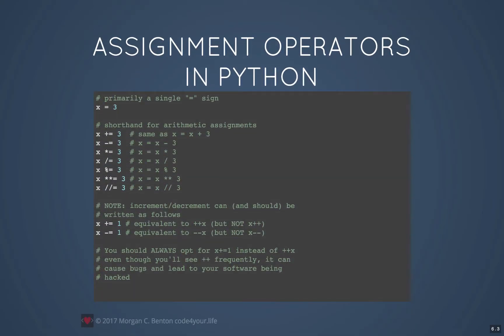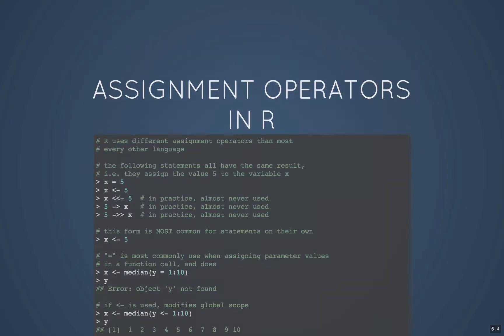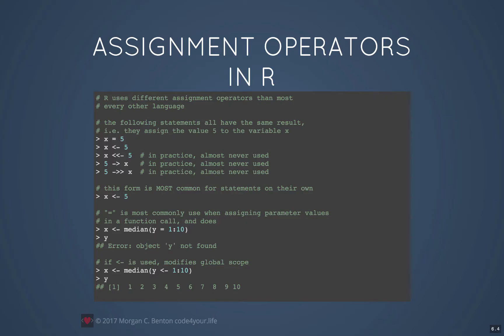Python assignment operators are pretty much the same and they follow on from the arithmetic operators. R has several different assignment operators: the single equal sign, the left-pointing single arrow, the left-pointing double arrow, the right-pointing single arrow, and the right-pointing double arrow. In practice, these last three assignment operators are almost never used — you'll probably never see them except in specialized code or code from people who are not quite sure what they're doing.